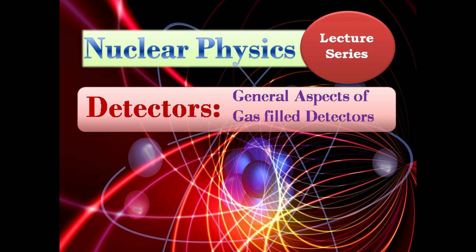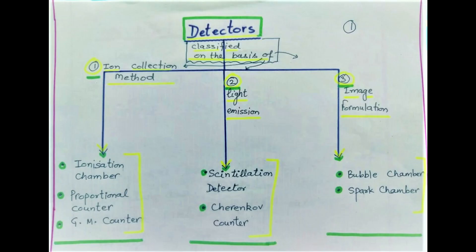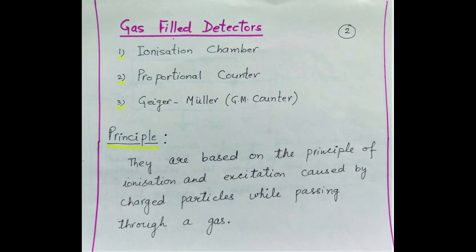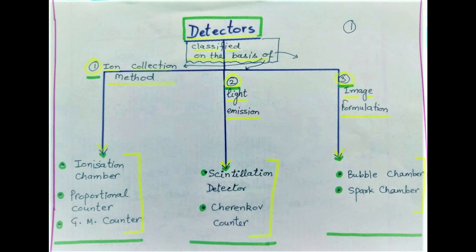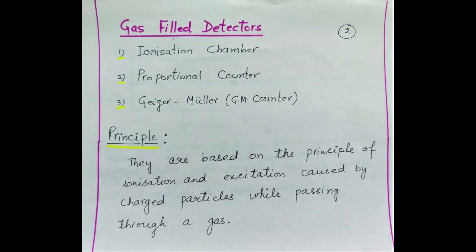Devices used to identify the type of particles and their energies are called detectors. They can be classified on the basis of ion collection method, light emission, or image formulation. In this lecture, I am going to discuss some general aspects of working of gas-filled detectors, which are ionization chamber, proportional counter, and GM counter. These detectors work on the basis of ion collection method.